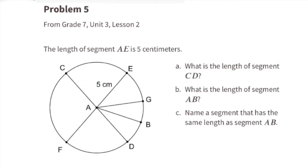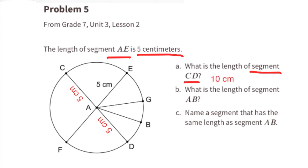Problem number 5 from 7th grade, Unit 3, Lesson 2. The length of segment AE is 5 centimeters. Part A: What is the length of segment CD? If AE is 5 centimeters, then AC is also 5 centimeters, and AD is also 5 centimeters. So the distance from C to D would be 5 centimeters plus 5 centimeters, or 10 centimeters.